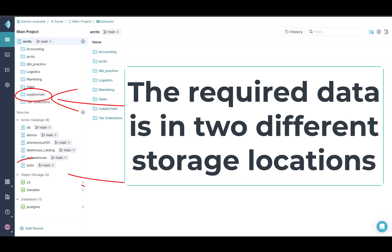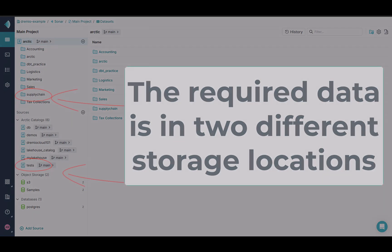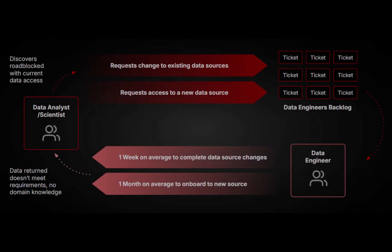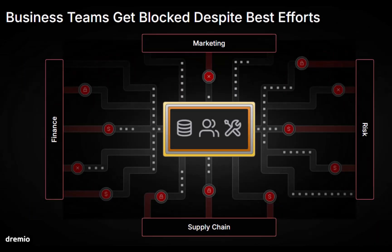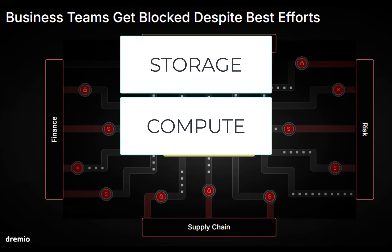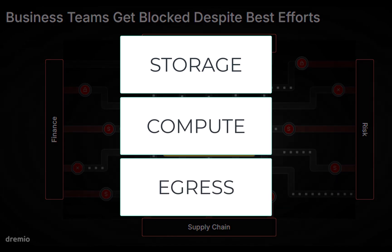Our required data sets are Iceberg tables located in two different data lakes. The challenge with combining data stored in different locations is that with legacy architecture, it required a data engineering team to move and combine the data through a complex and often costly ETL process that duplicates the data and could incur additional storage, compute, and egress fees.